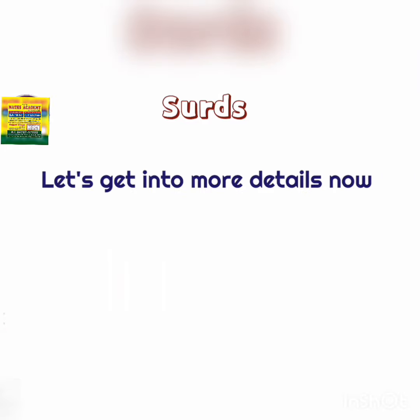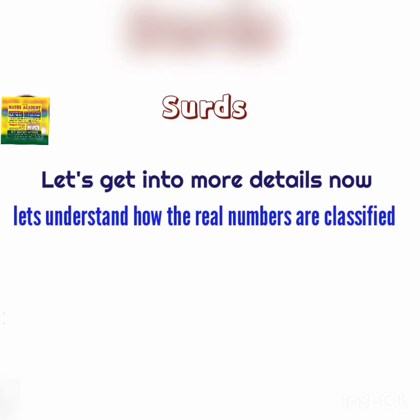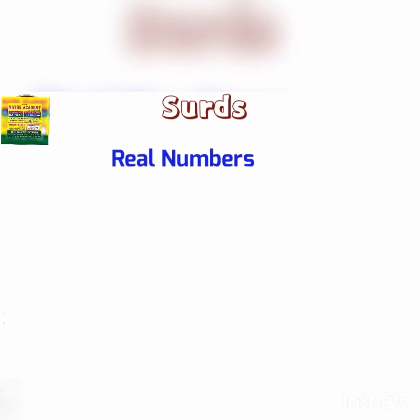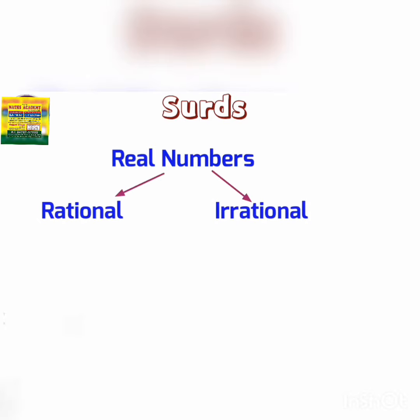Let's get into more details now and understand how real numbers are classified. Real numbers are classified as either rational numbers or irrational numbers. Irrational numbers include square root of 2, cube root of 5, square root of 6, and so on.